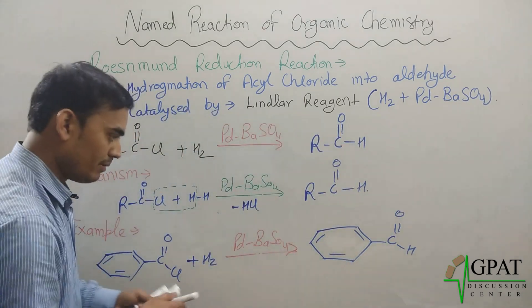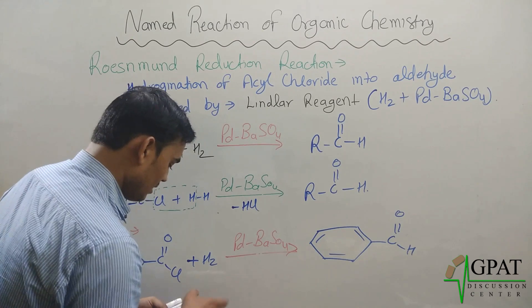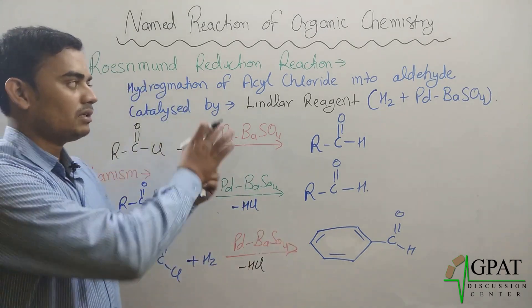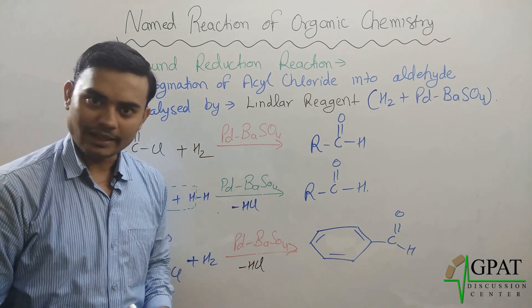What will be removed? HCl will be eliminated in this reaction. So this is the Rosenmund reduction reaction. Thank you.